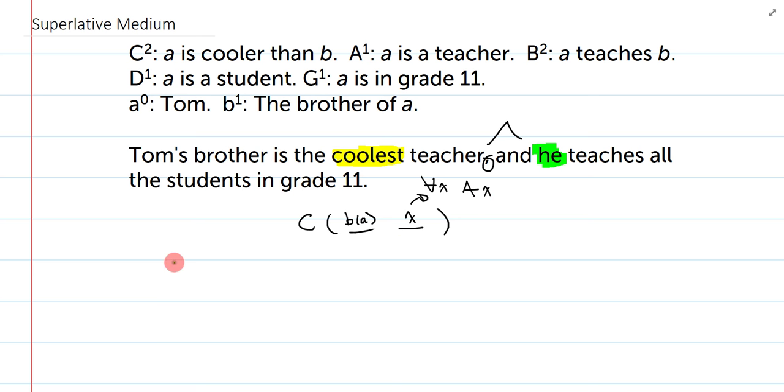Okay. So, I'm actually ready to write my superlative, but I know that a superlative has a special thing. When it's a superlative, I'm actually talking about all other teachers. So, I need to remember to include that x is not equal to B of A, because I need to make sure I state that Tom's brother can't be cooler than himself, because that doesn't make any sense. So, I'm going to say all other teachers other than Tom's brother, that's who Tom's brother is cooler than.